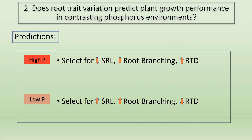The second question I am asking is: is root functional trait expression associated with plant growth performance? My prediction generally follows the same trend. Under high phosphorus, plants producing roots with less absorptive capacity will be favored, so we should see selection for lower SRL, lower branching, and higher RTD. Under low phosphorus conditions, plants producing roots with higher absorptive capacity will be favored, so we should see selection for higher SRL, higher branching, and lower RTD.